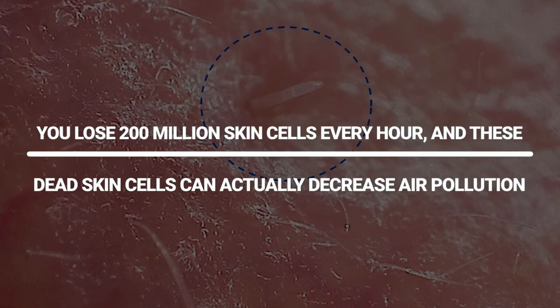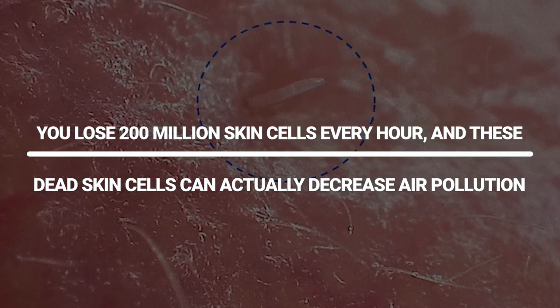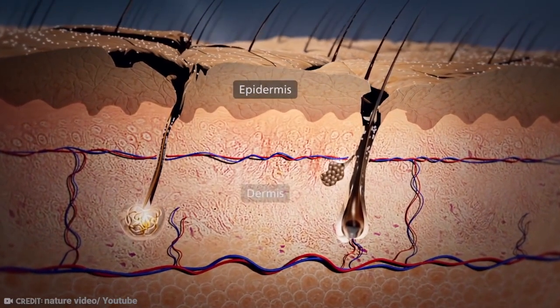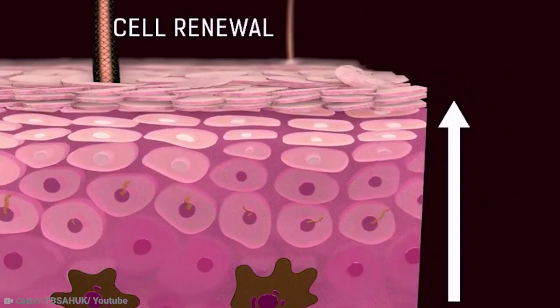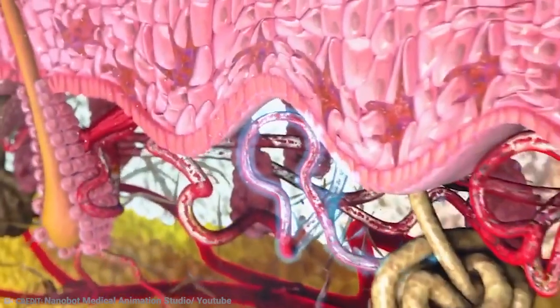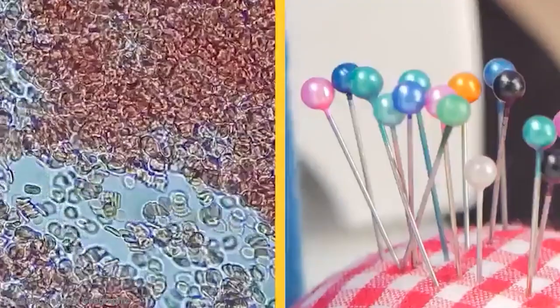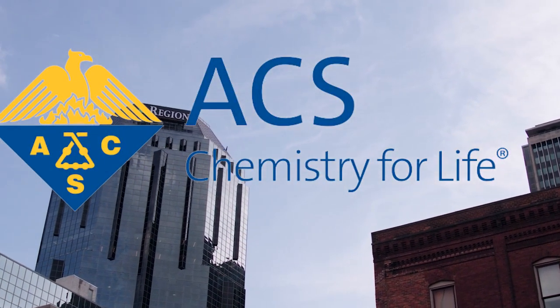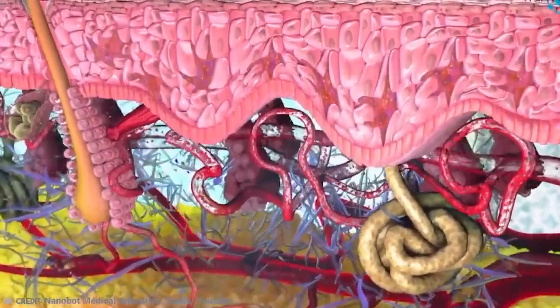You lose 200 million skin cells every hour and these dead skin cells can actually decrease air pollution. Your skin grows quickly, very fast. Your skin's top layer, the epidermis, is constantly striving to replenish these exfoliated skin cells with new ones. In fact, your epidermis contains 95% of the cells that are responsible for producing new skin cells. The American Chemical Society states that these dead skin cells are a key source of household dust and can be beneficial.